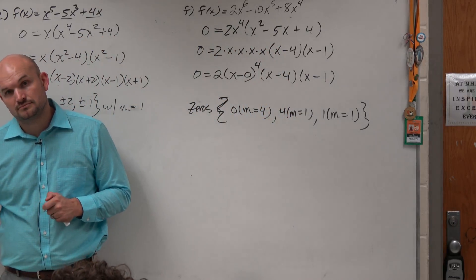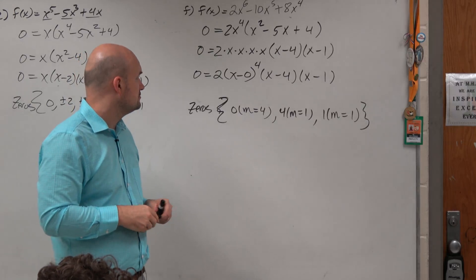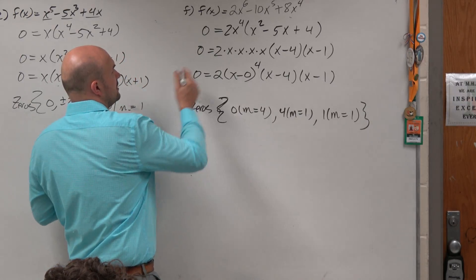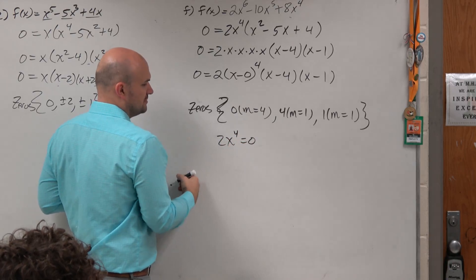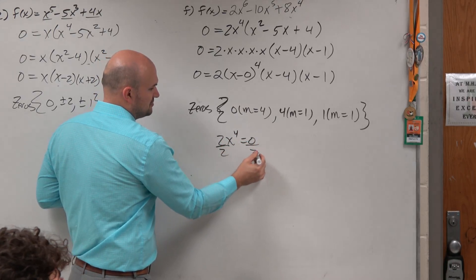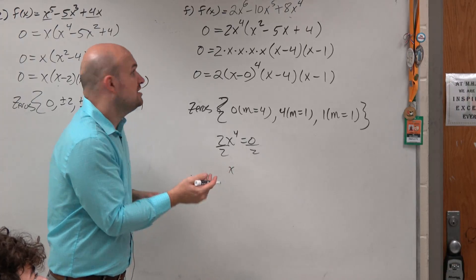Yes? Wait, so there's the 2 in front of that. What happens just to that? Good question. Let's do the zero product property from here. 2x to the 4th equals 0. What happens to the 2? It divides out. So guess what?